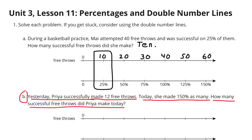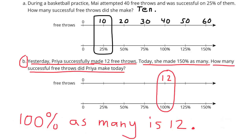Problem B. Yesterday, Priya successfully made 12 free throws. Today, she made 150% as many. How many successful free throws did Priya make today? If Priya made 12 free throws yesterday, then 100% of 12 would be 12. So we know that we can put a 12 directly above the 100%.